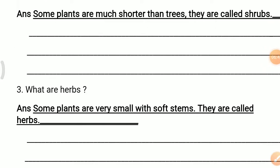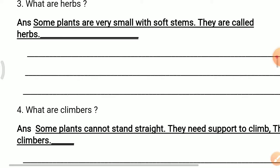Question 3: What are herbs? Answer: Some plants are very small with soft stems. They are called herbs. Plants that are very small and have soft stems are called herbs.